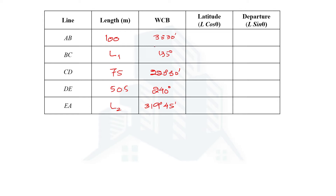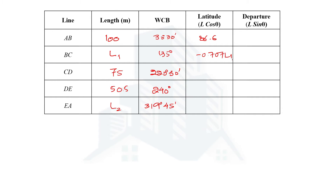Using the formula for latitude (L·cos θ): the latitude of AB is 86.6, which is 100 multiplied by cos 30°30'. The latitude of BC is −0.707·L1, since the length is unknown. The latitude of CD is −57.03. The latitude of DE is −25.25. Since the length of EA is not given, its latitude is expressed as 0.763·L2, since cos 319°45' equals 0.763.